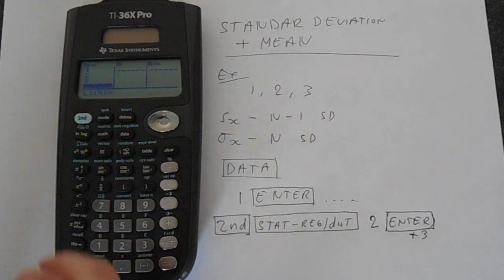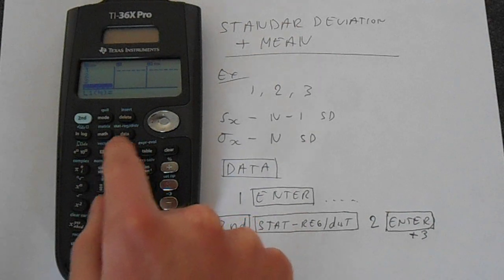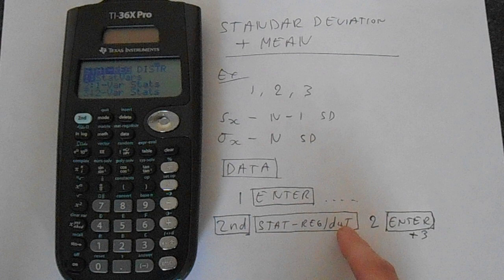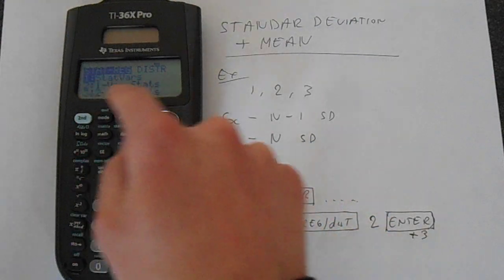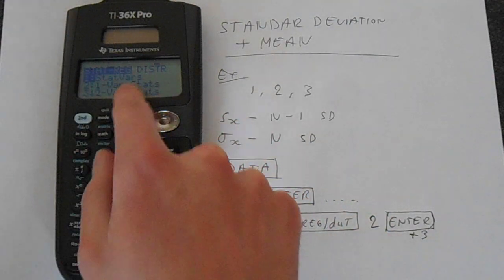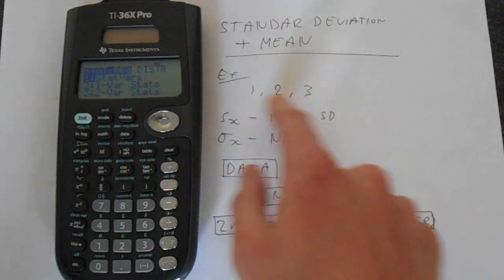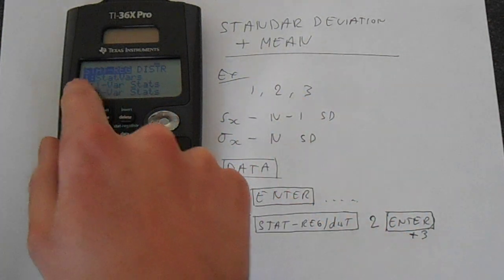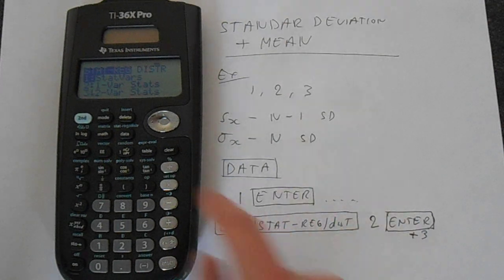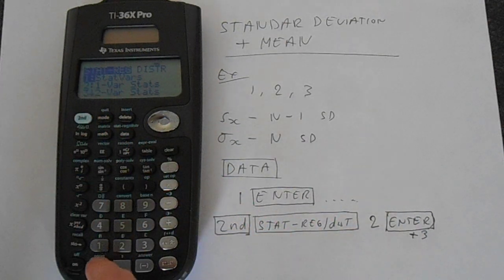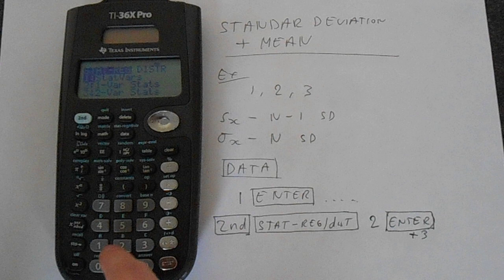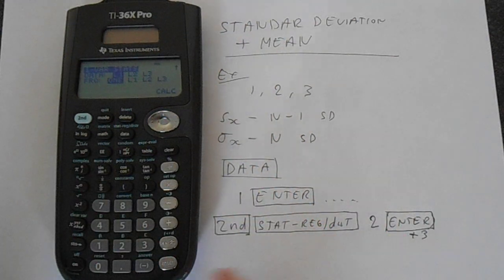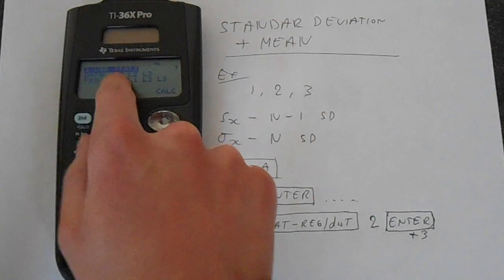So then we go to second function, and then on top of the data you've got stat reg slash dist. And we press that and it gives us all these options. And we want one variable statistics because we've only got 1 that's like the X series. If we had X and Y we'd use 2, but for here we're just going to use 1. So this is on number 2 and that gets us into here. And we just press enter 3 times.